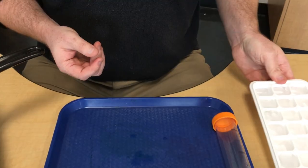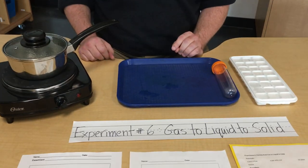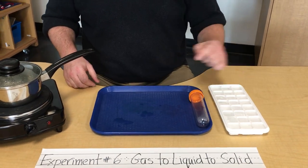And those are the three states of matter. That's how water can go from a gaseous state, the steam, to a liquid, the condensation, and then back to a solid, the ice.